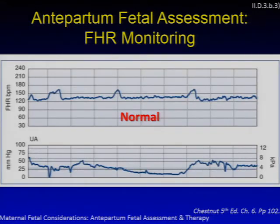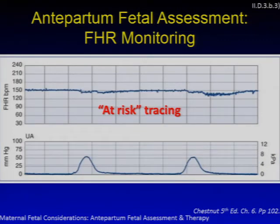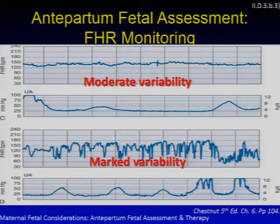A normal reactive fetal heart rate tracing shows a baseline between 110 and 160, moderate variability of 6 to 25 bpm from peak to trough, and 2 or more accelerations of at least 15 bpm above baseline lasting at least 15 seconds in a 20-minute period. An at-risk tracing has a normal baseline but minimal variability, no accelerations, and repetitive late decelerations. Here are examples of no variability, minimal variability, moderate variability, and marked variability tracings.